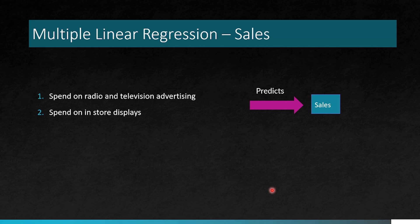This is about the multiple linear regression where multiple variables are involved. So like if I am going to predict sales, it is spent on radio and television advertising and spent on store displays. These two variables predict the sales. The difference between the simple linear regression and the multiple linear regression is that the multiple linear regression involves two or more variables.